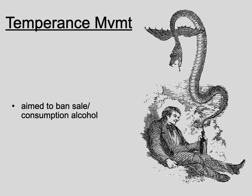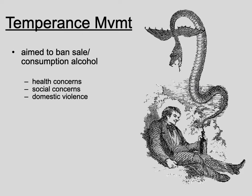Next we have the temperance movement. It was mainly focused on banning the sale and consumption of alcohol. In the 1830s the average American drank almost four times as much alcohol as they do today. This obviously led to many social problems — drinking alcohol causes many health concerns such as liver damage and kidney damage.